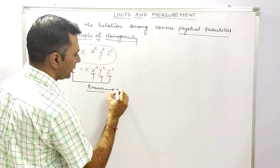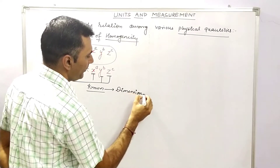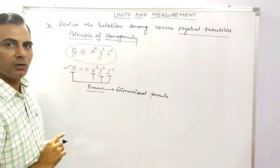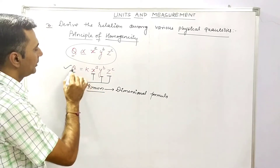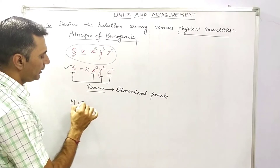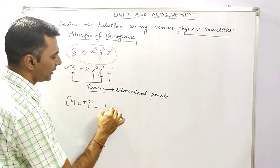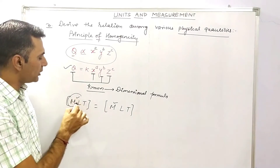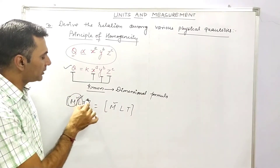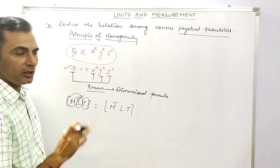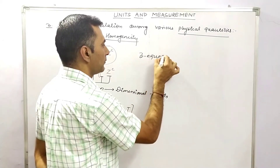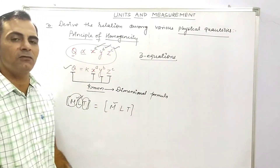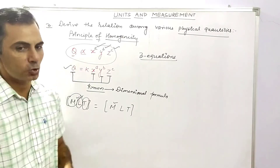For all quantities, we will write the dimensional formula. We have two sides of this equation, and by equating the dimensions on both sides, we get three equations.